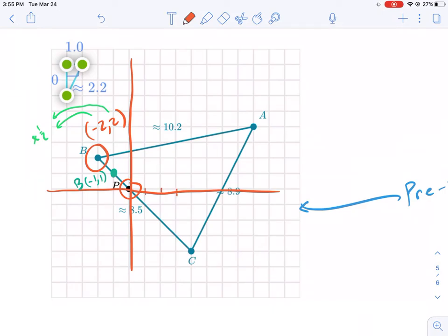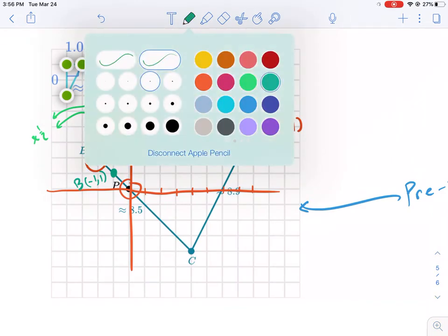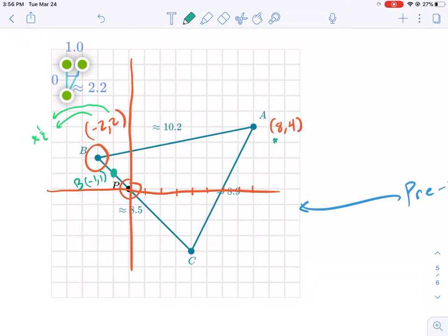Point P is the origin, which you can make it for this type of problem. We're going to label A and that's eight across and four up. What happens when we multiply both these numbers times one half? Well, if you multiply eight times one half, you get four. And multiply four by one half and you get two. This is our new point, A prime.